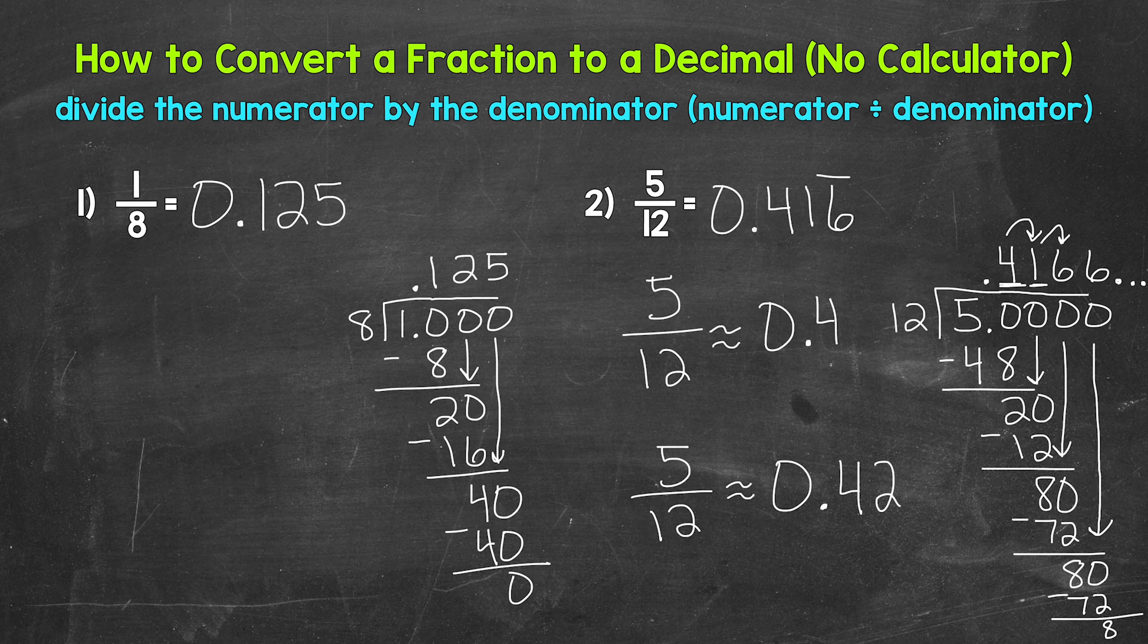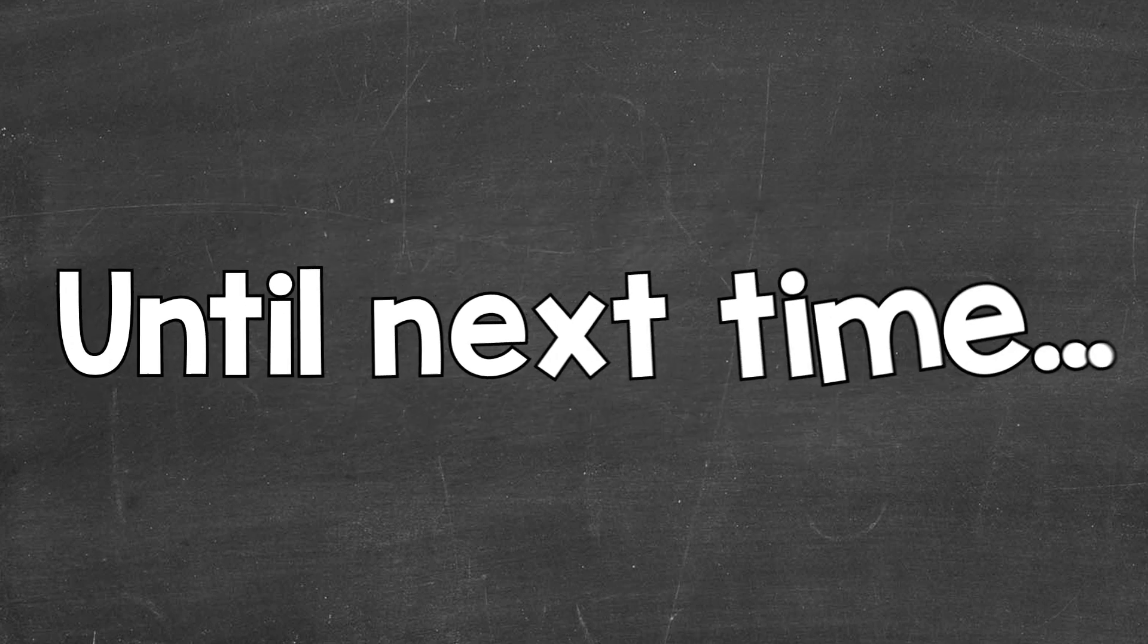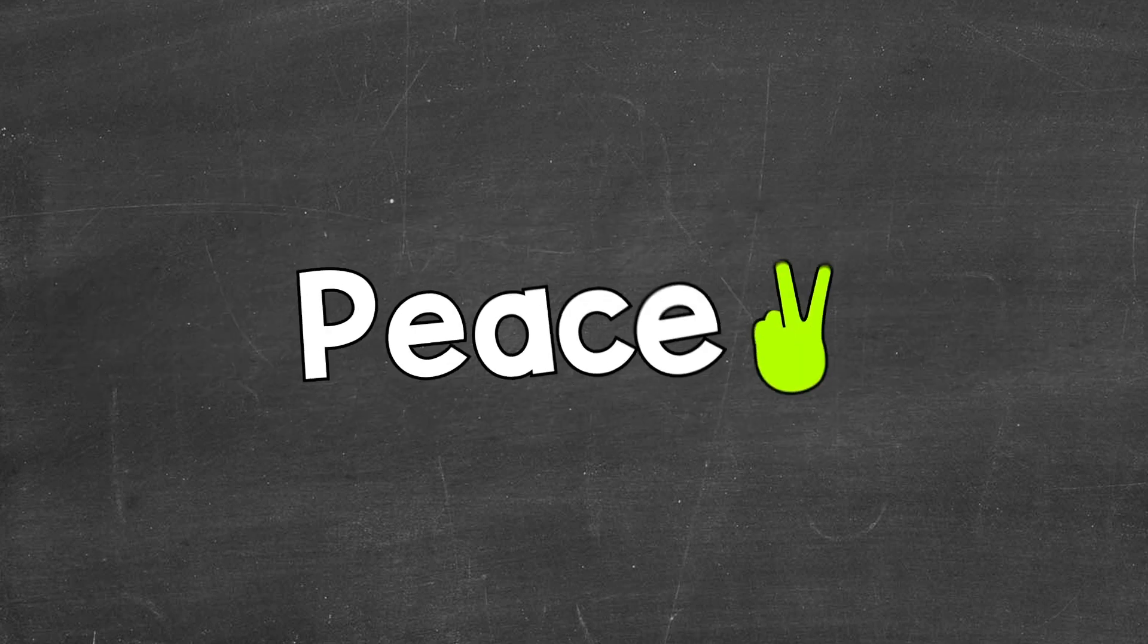So there you have it. There's how to convert a fraction to a decimal by hand, without a calculator. All we need to do is divide the numerator by the denominator. And that will give us the decimal form of the fraction. And keep in mind, we always have the option of rounding if we end up with a long decimal or repeating decimal. I hope that helped. Thanks so much for watching. Until next time, peace.